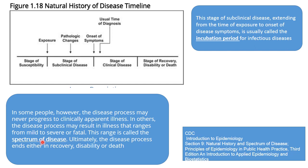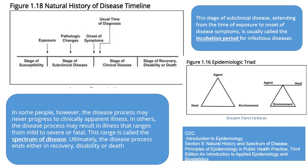This range is called the spectrum of disease. Ultimately, the disease ends in recovery in the majority of people, disability in some, or death in 0.5 to 1% of those who get the disease. This happens because in any infectious disease, the seriousness of an illness depends on the epidemiological triad: the agent, the host, and the environment.